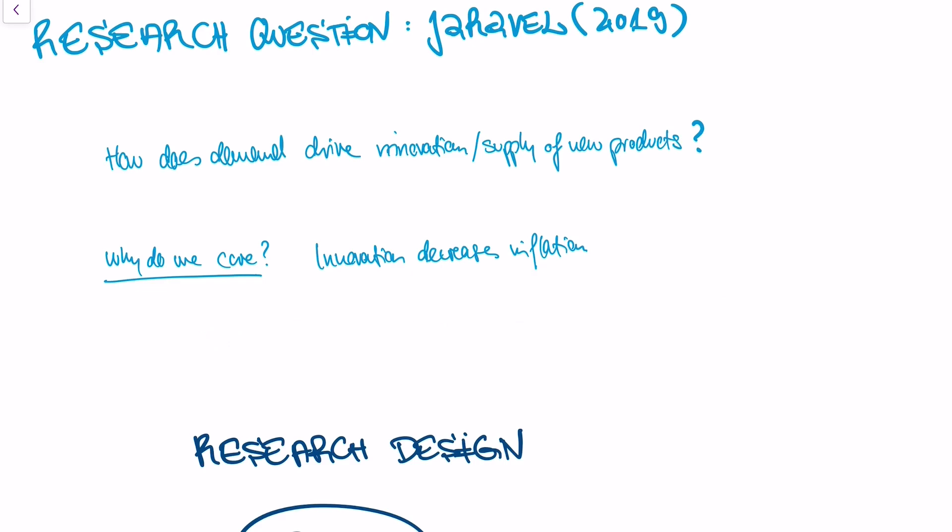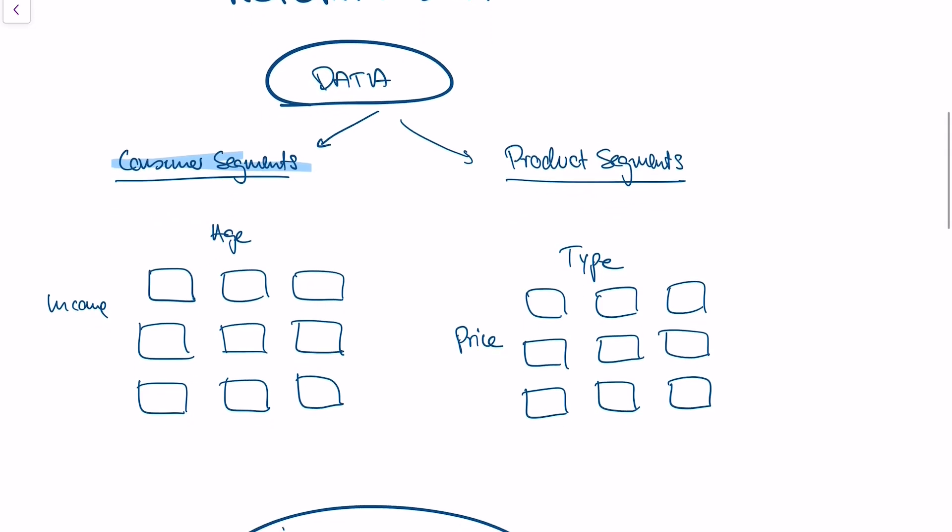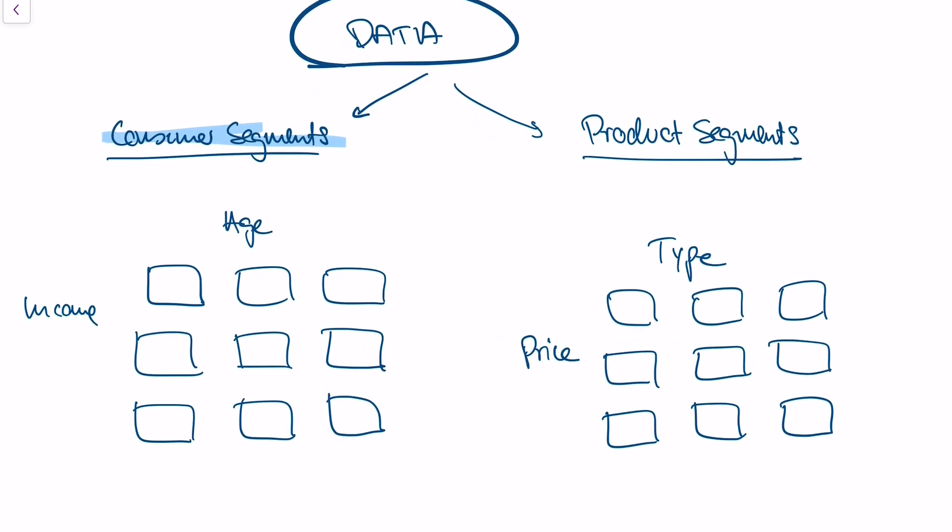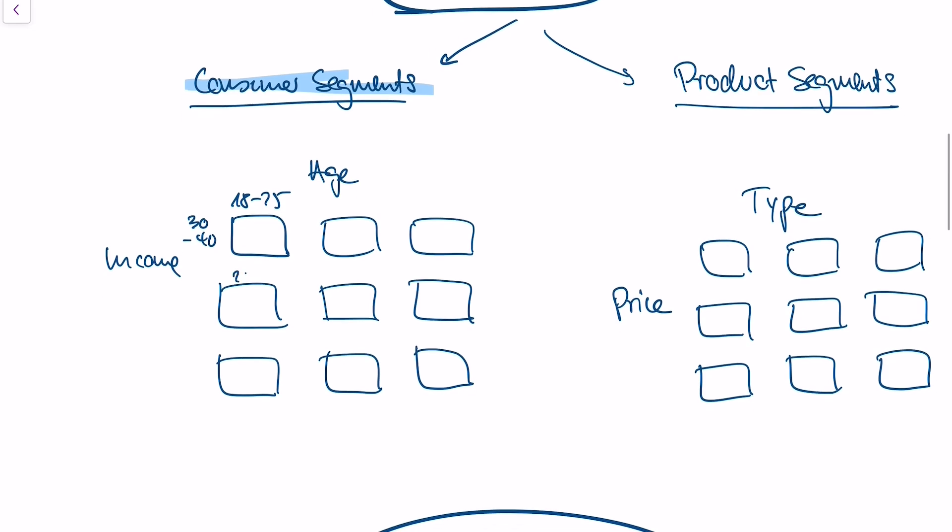Let's get into the research design. We want to understand how does demand drive innovation or the supply of new products. So we have two types of data. We have consumer segments - those are segments with different age and income. He has 108 different segments. So one segment might be age 18 to 25 and income 30 to 40,000, then the next segment might be 25 to 30 and income 40 to 50,000 and so on.